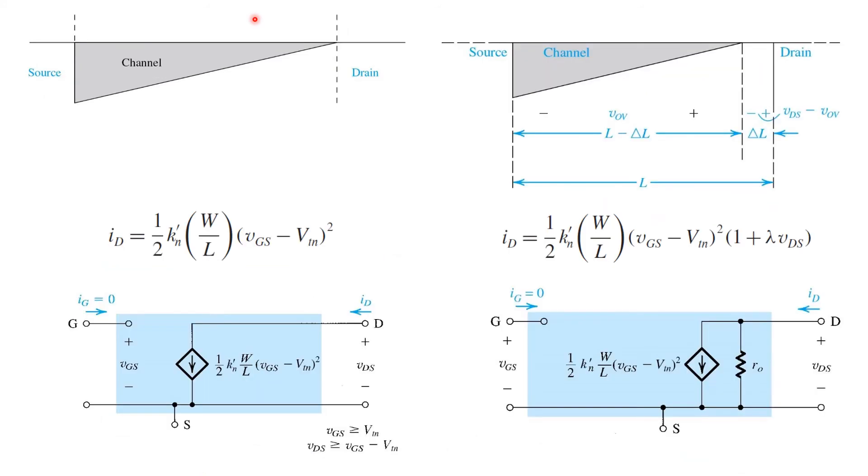So, here we compare our simple model of saturation, where the drain region becomes pinched off and we've got a simple square law model, shown on the left, to the model where we incorporate channel length modulation, shown on the right, where we introduce this extra term that takes into account the dependence of drain current on VDS.